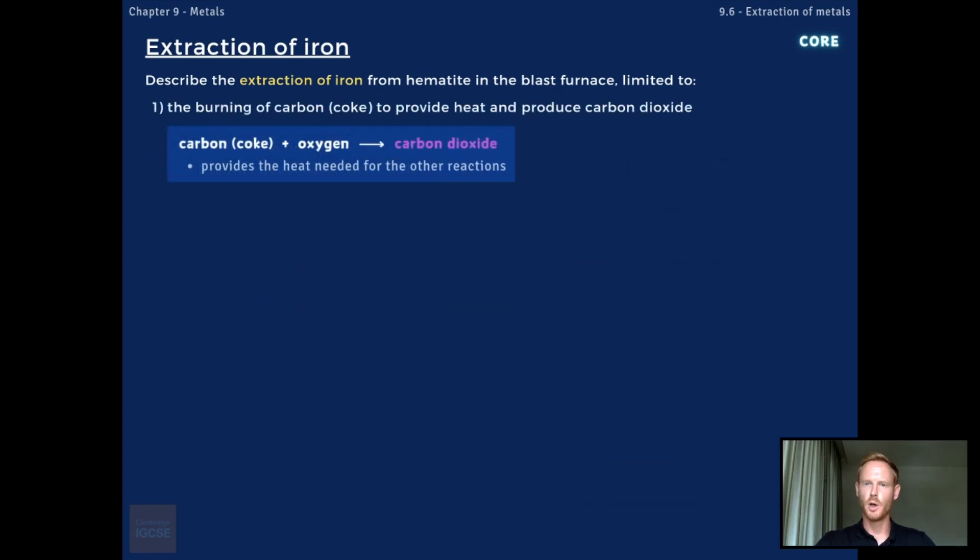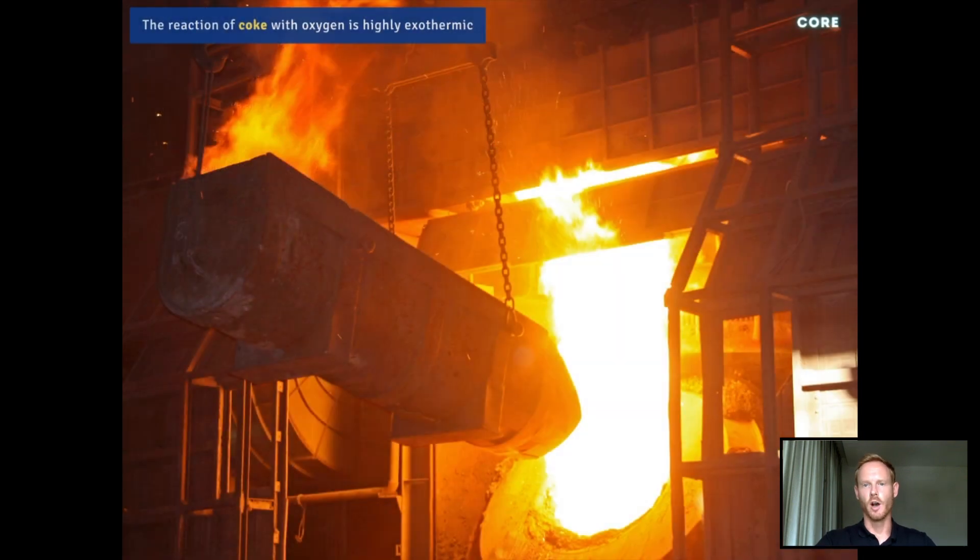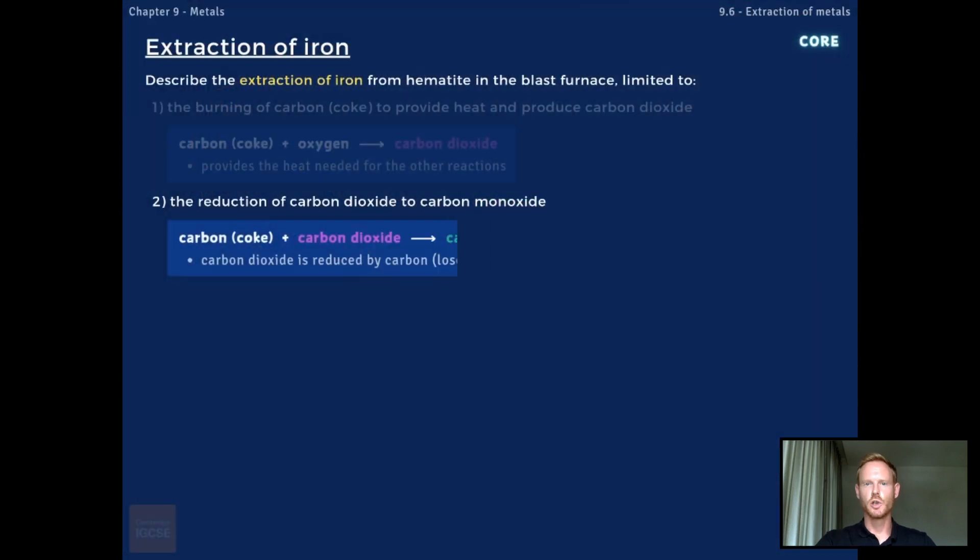Stage 1 is the burning of carbon to provide heat and produce carbon dioxide. Carbon reacts with oxygen in the air, forming carbon dioxide gas. The heat released provides the high temperatures needed to drive the other reactions. Stage 2 is the reduction of carbon dioxide to carbon monoxide. The carbon dioxide gas from the first reaction reacts with more carbon, higher up in the furnace, to produce carbon monoxide. Because carbon dioxide loses oxygen, we say that it's been reduced.